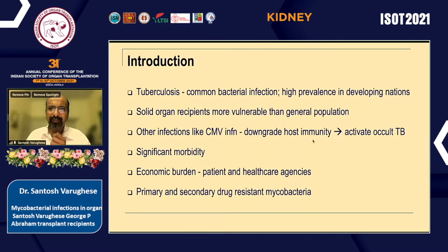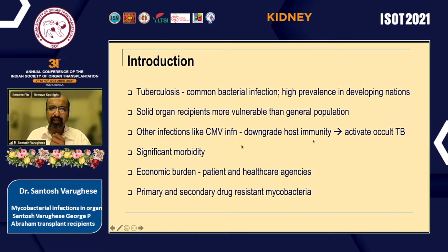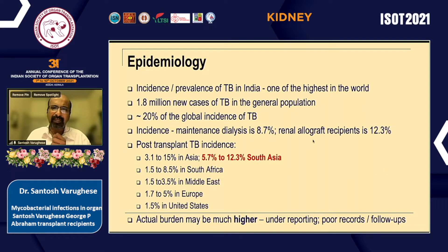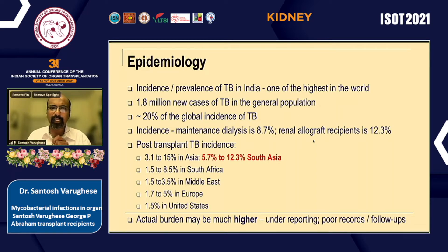Tuberculosis is very common, highly prevalent, and endemic in our community. Solid organ recipients are more vulnerable, and infections like CMV can activate occult tuberculosis causing significant morbidity, mortality, economic burden, and pill burden, with primary and secondary resistance of the organism being concerns. We are in the process of bringing out guidelines for treatment of infections in South Asia, of which TB is an important one, and this will be published in the Indian Journal of Organ Transplantation very soon.